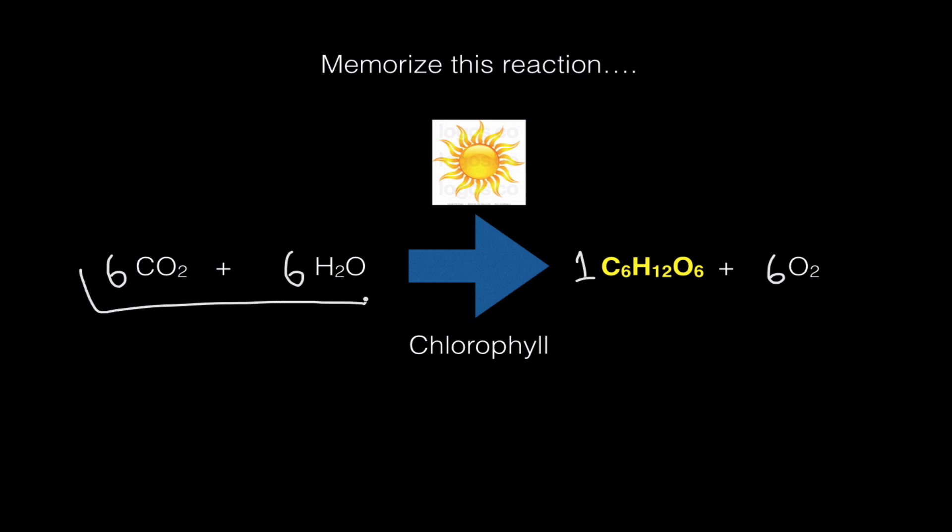These things over here are referred to as the reactants. In chemistry, reactants are always to the left of the arrow, and these two things over here are called the products.